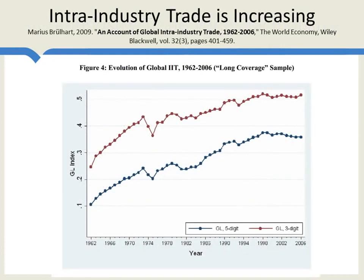This graph shows that intra-industry trade has become more important as a total share of world trade. Going back to Ricardo's time, the paradigmatic example of trading wheat for cane sugar was indeed representative — intra-industry trade was quite low. But we are moving from a world in which trading wheat for cane sugar is representative towards one in which trading motorcycle for motorcycle is representative.